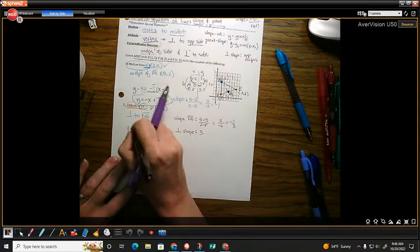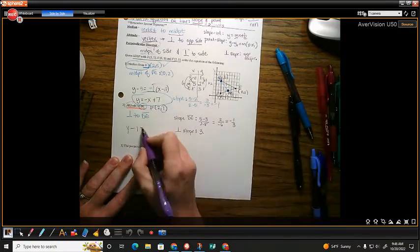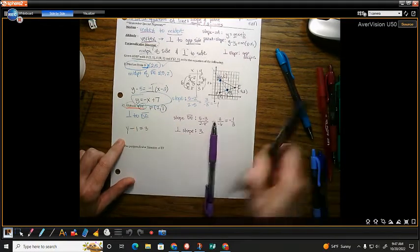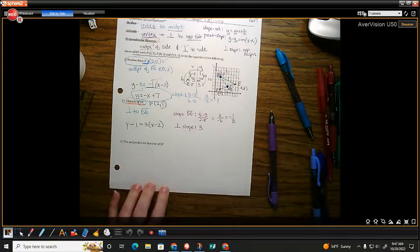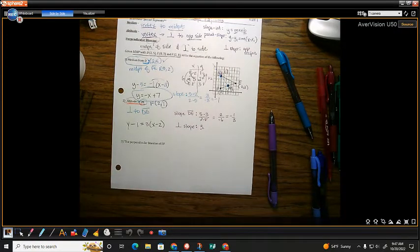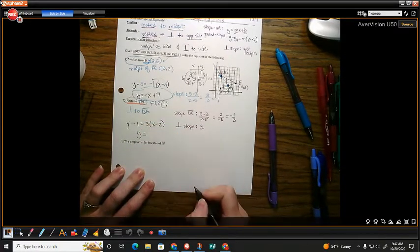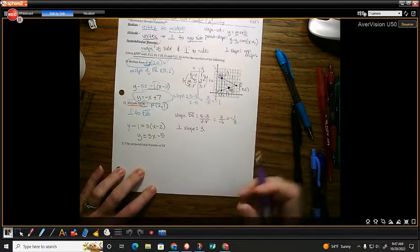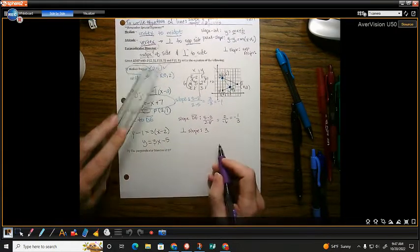So you go Y minus what? Your Y value 1 equals, what was my slope for my altitude? That's 3 times X minus 2. And so, of course, you're never satisfied with that. You like to put it in slope-intercept form just for the practice. And you do that, and what do you end up getting Y equals? 3X minus what?